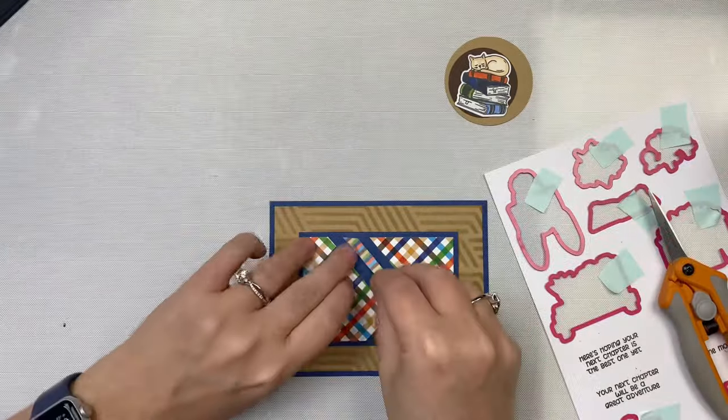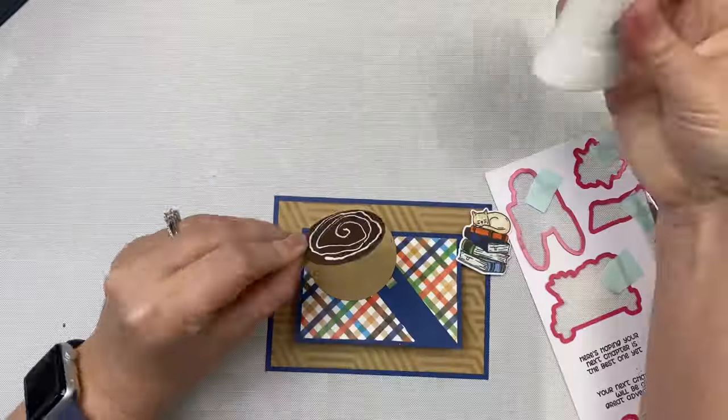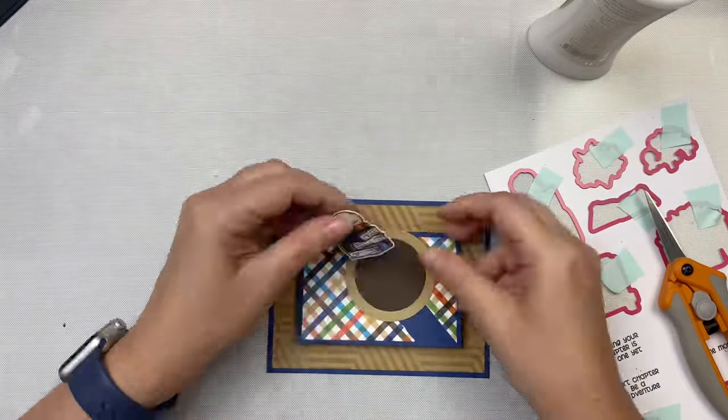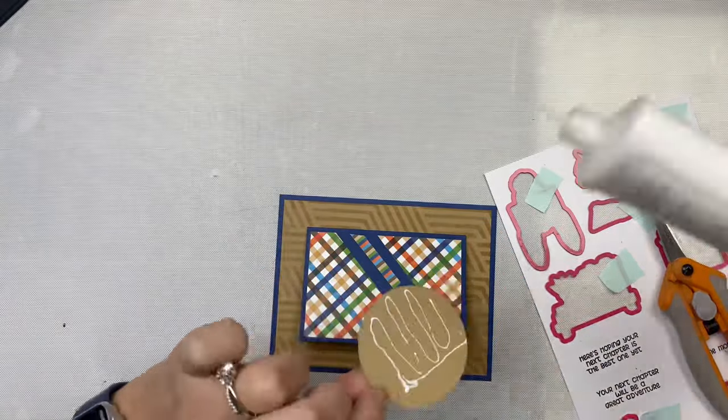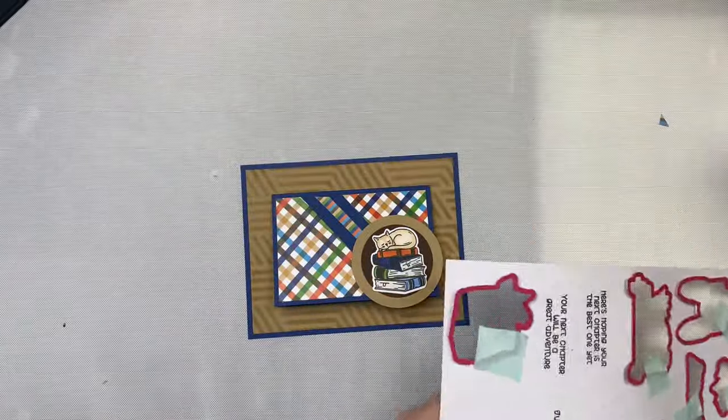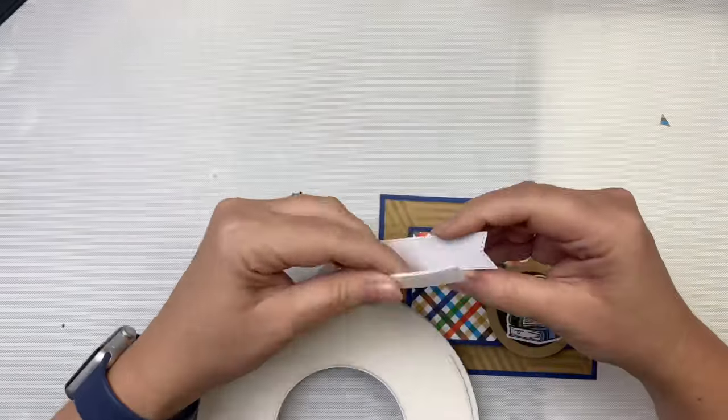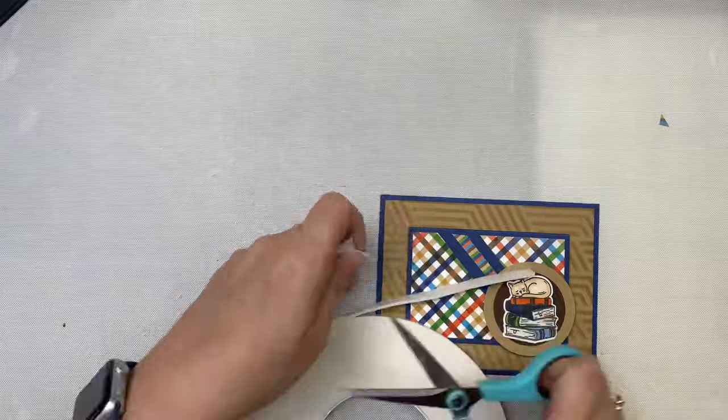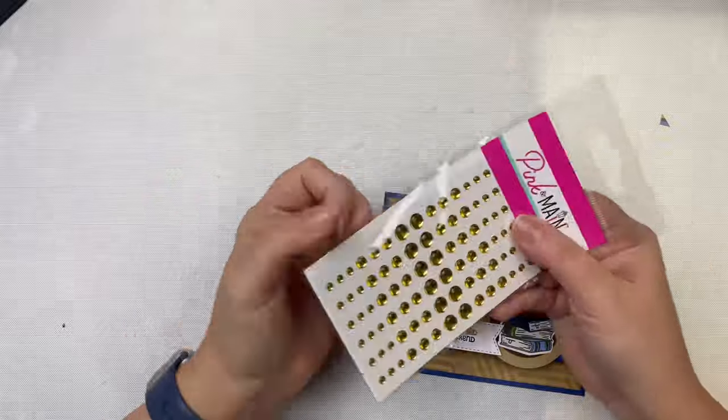I cut a 2 inch circle out of brown stone and a 1 and three-quarter inch circle out of the coffee shop brown color. For the image, I'm using the books with the cat on top. As for the sentiment, I'm using a stitched banner die to cut out the sentiment that says 'sorry I'm booked for the weekend.' I popped the sentiment up with some foam tape and then finished off the card with some small gold enamel dots.